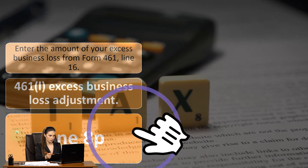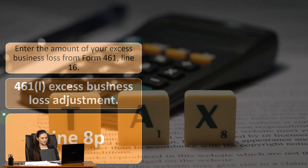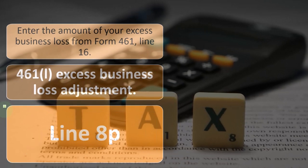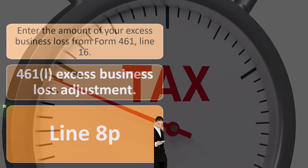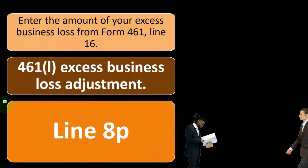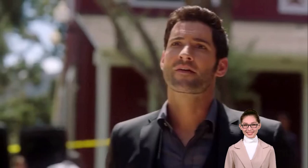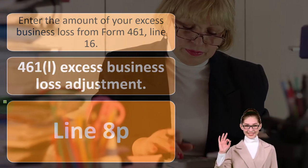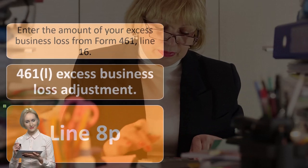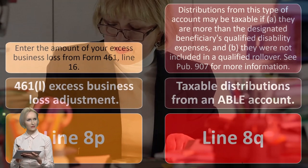Line 8P — the Section 461(l) excess business loss adjustment. Enter the amount of your excess business loss from Form 461, line 16. This is a more specialized area involving the business component of taxation in relation to a business loss situation. Note that when we have losses, the IRS is typically very skeptical because losses could actually be a tax benefit. If you have business income, the IRS wants a piece of it; if you have losses, there may be limitations on how much loss you can take.